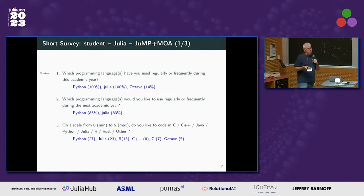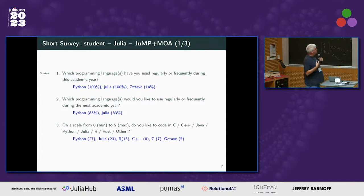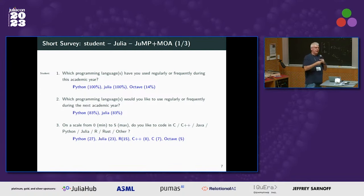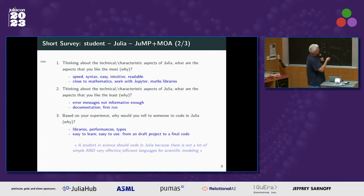The profile of students there is completely different. They are mathematicians and come with Python and also Julia. What is very interesting is that they are equally ready to continue with Python or Julia. These students are older — some are secondary school teachers — and they say a student in science should be coding Julia, because there are not many languages that are both simple and very efficient for scientific computing and modeling.